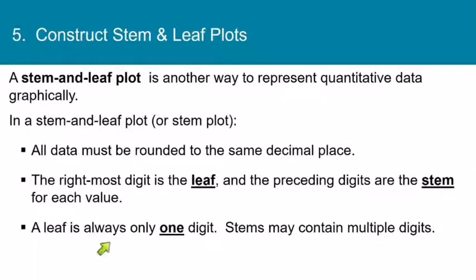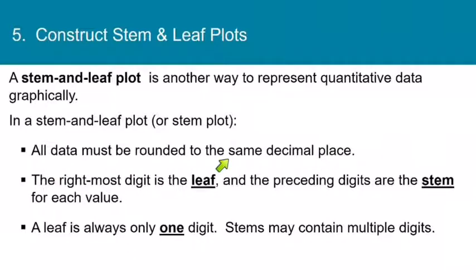A leaf is always only one digit — that's very important. A leaf must be only the last digit. That is why all the data must be rounded to the same decimal place, because we need all the leaves to represent the same place value. On the other hand, stems can contain multiple digits.